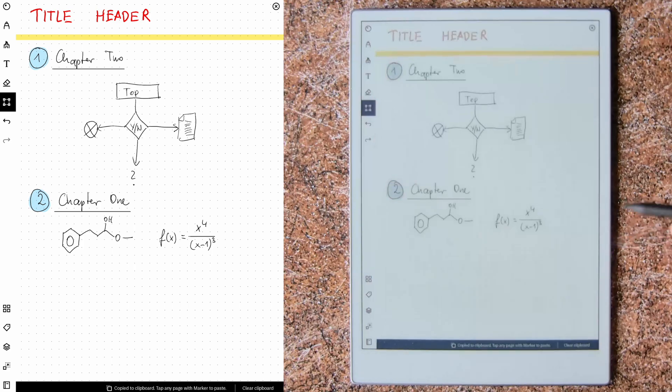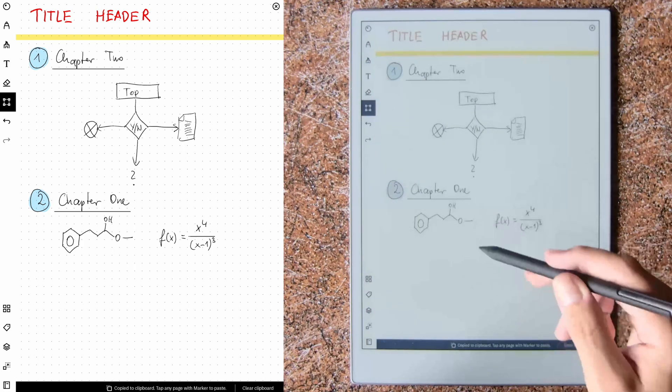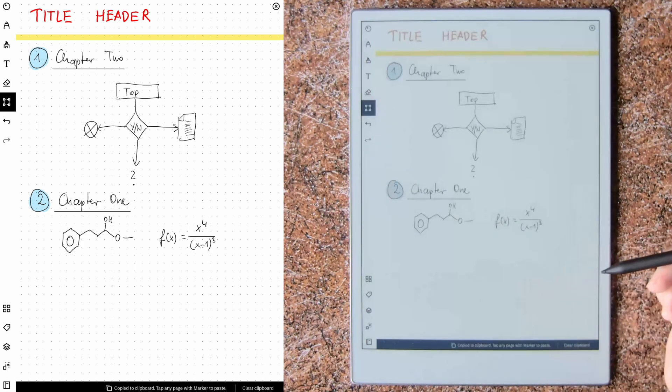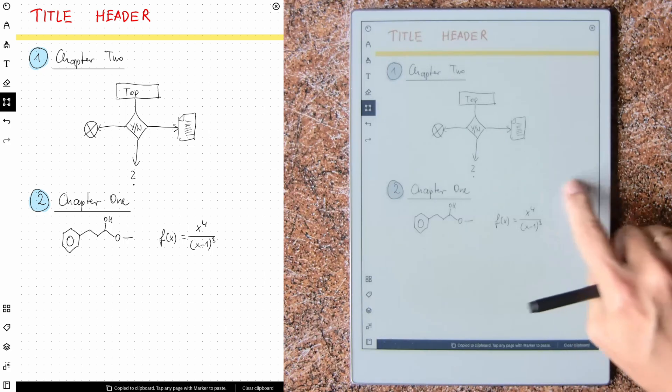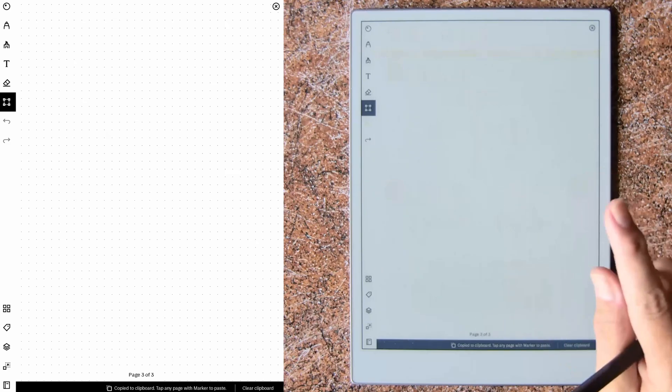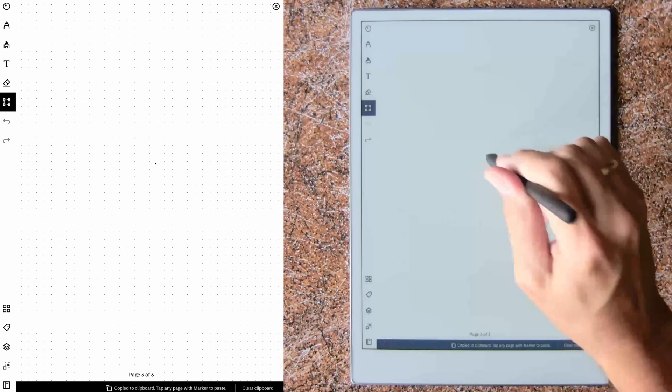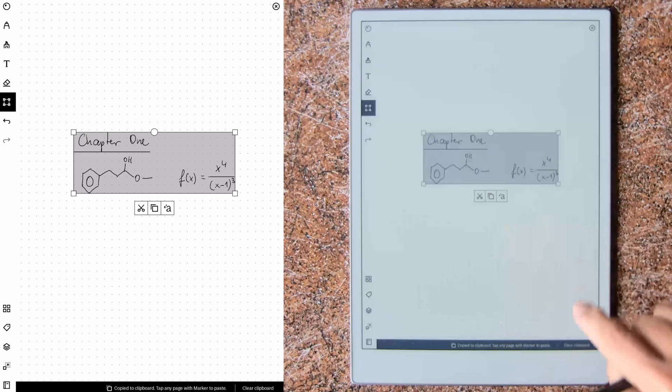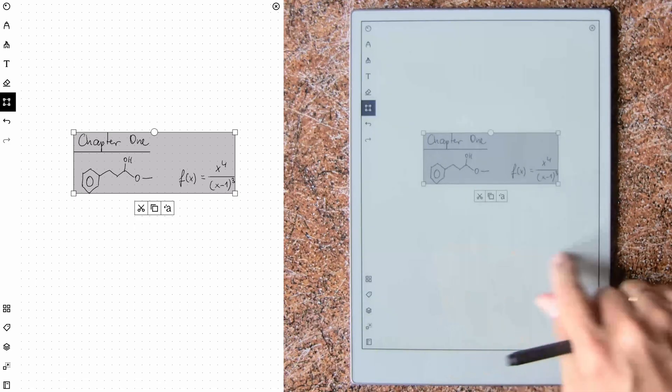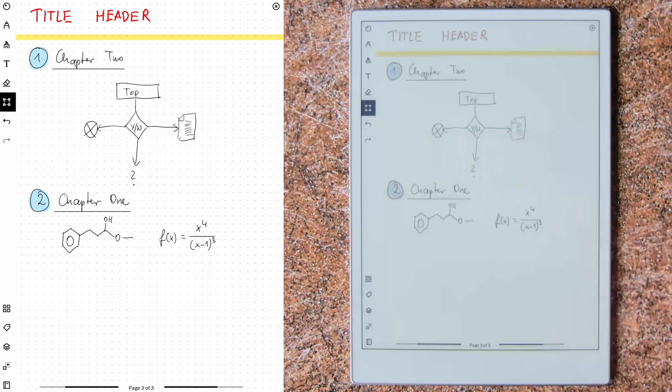What I've done now is I have selected this copy feature and you see now here copy to clipboard, tap any page with marker to paste. So I could now also say, yes, I may need this later. Let's paste it on page two. And now I clear the clipboard and now I go back and continue to work on this page.